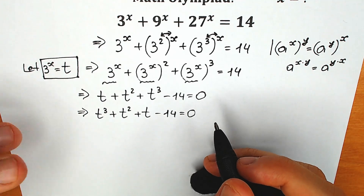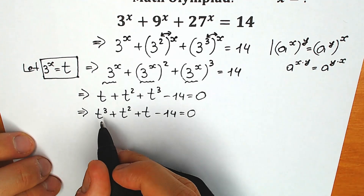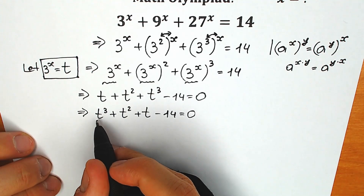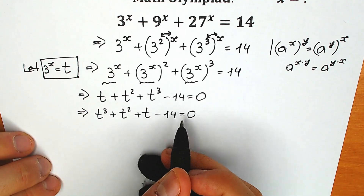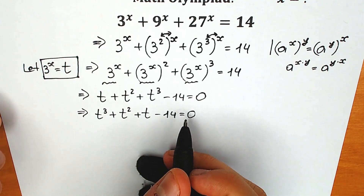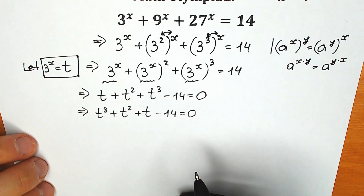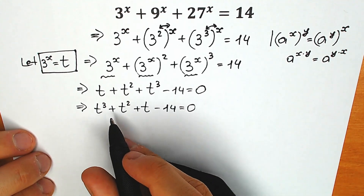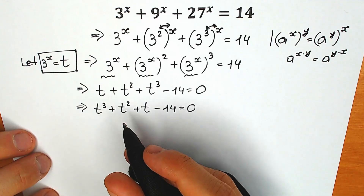Exactly in this case, I can see that t equals 2 is a root, because 2 cubed plus 2 squared plus 2 minus 14 equals zero. So t minus 2 is a factor. We can see that t equals 2 is a solution, and t minus 2 is a factor.